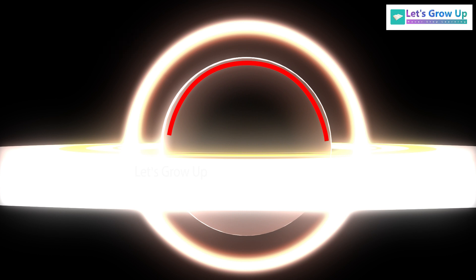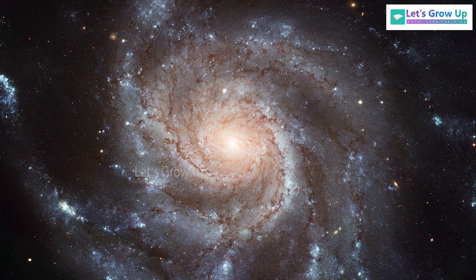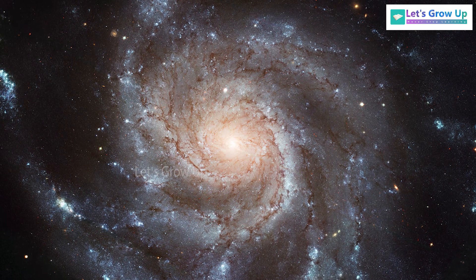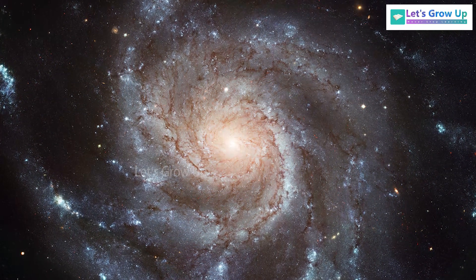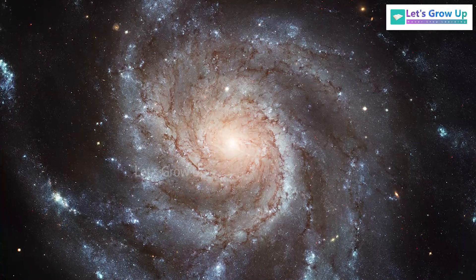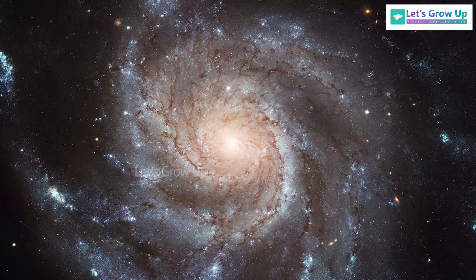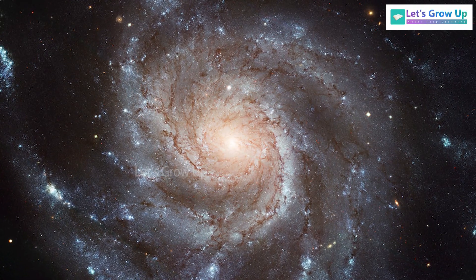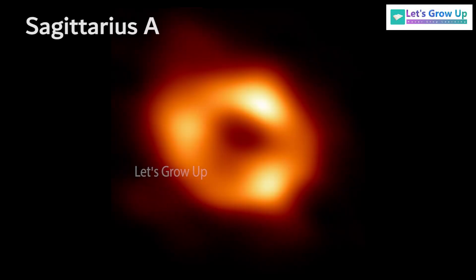The Milky Way could contain over 100 million black holes. Scientists have identified a supermassive black hole at the center of the Milky Way which is called Sagittarius A*. This is the first image of the supermassive black hole at the center of our galaxy.